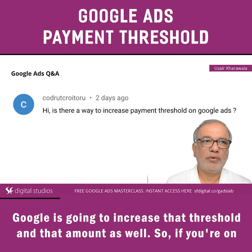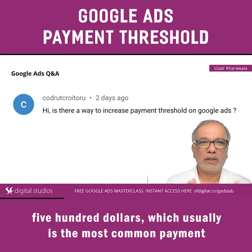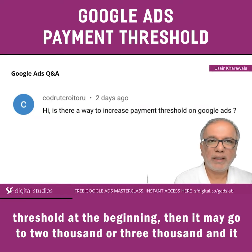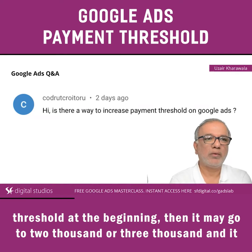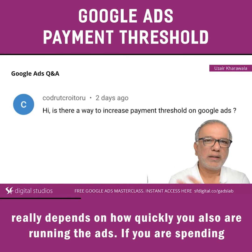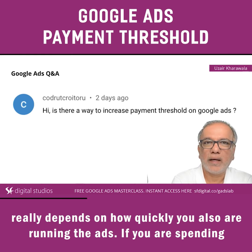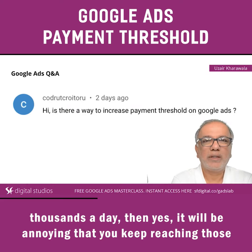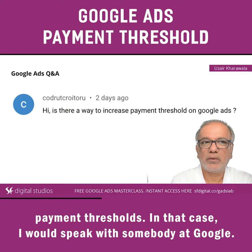If you are on $500, which usually is the most common payment threshold at the beginning, then it may go to $2000 or $3000, and it really depends on how quickly you are running the ads. If you are spending thousands a day, it will be annoying that you keep reaching those payment thresholds.